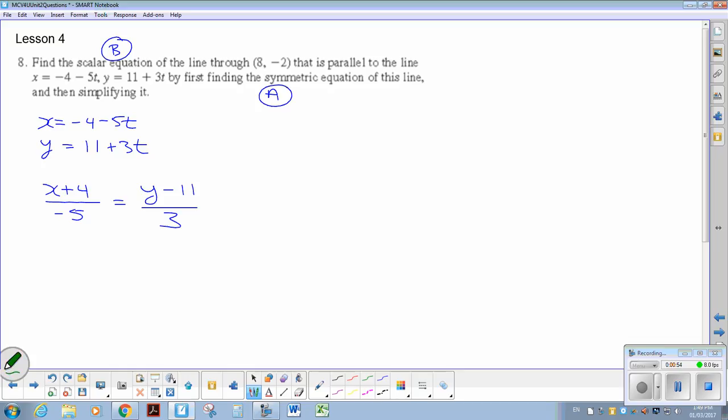So for example, I added 4 and then I had to divide by negative 5. That's how I got my symmetric. So there's the symmetric equation.